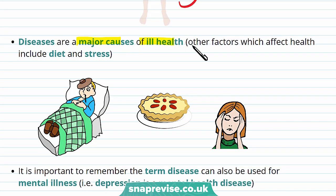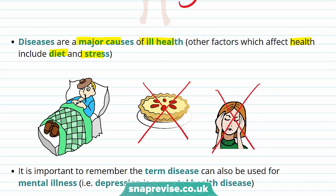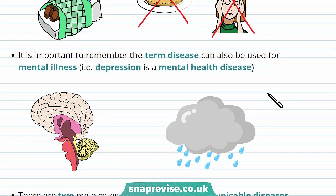Other factors which affect health include diet and stress. In order to have good health, you may have to pay close attention to your diet — for instance, limiting the amount of sugar you intake. It is also important to limit the amount of stress you're exposed to. The term disease can also be used for mental illness. For example, depression is a mental health disease, and anorexia is also another type of mental health disease.